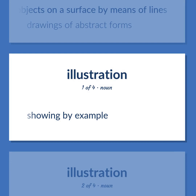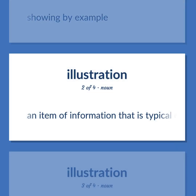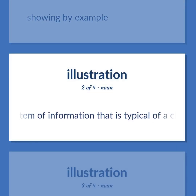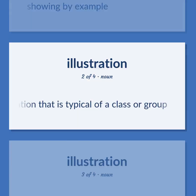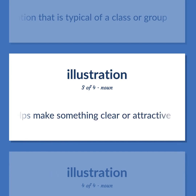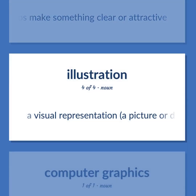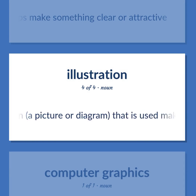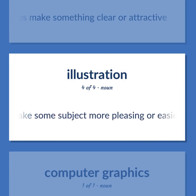Showing by example. An item of information that is typical of a class or group. Artwork that helps make something clear or attractive. A visual representation — a picture or diagram — that is used to make some subject more pleasing or easier to understand.